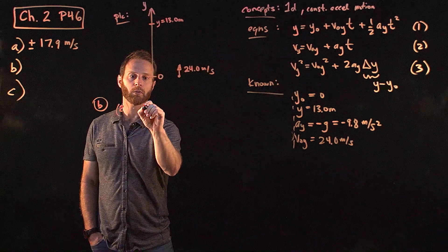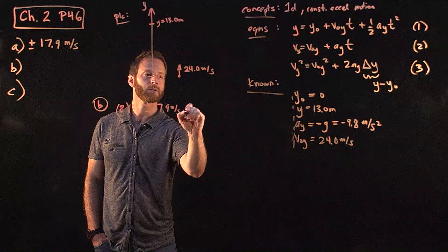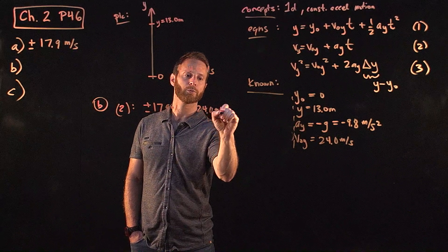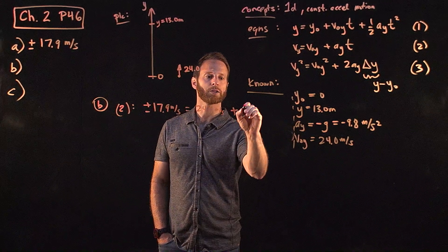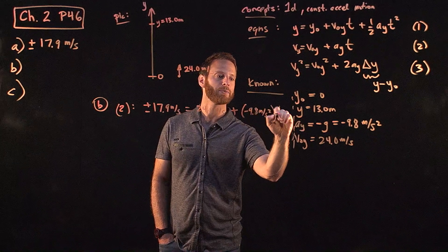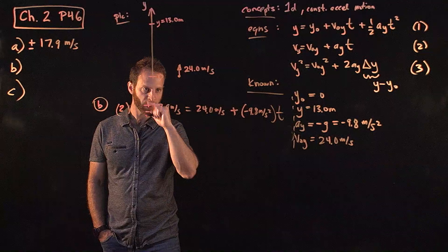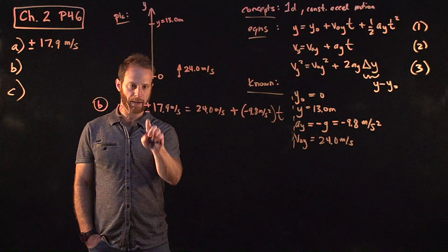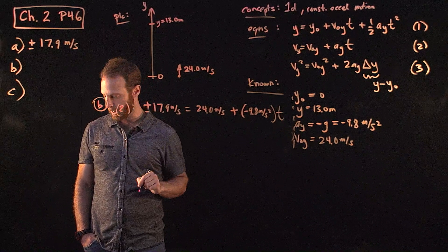The final velocity, which we're not sure, it's plus or minus 17.9 meters per second equal to the initial velocity of 24.0 meters per second, plus the acceleration in the y direction, the minus 9.8 meters per second squared, times the time. The time is what we want. We know everything else, so we're in good shape. You can subtract over the 24 and divide by minus 9.8, keeping in mind that you can solve this equation two ways, whether this is plus or minus.